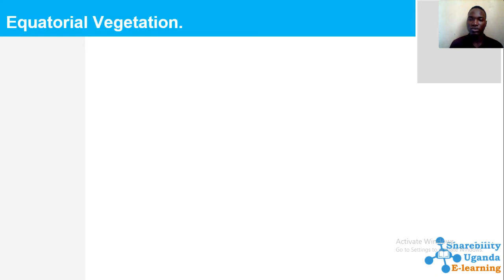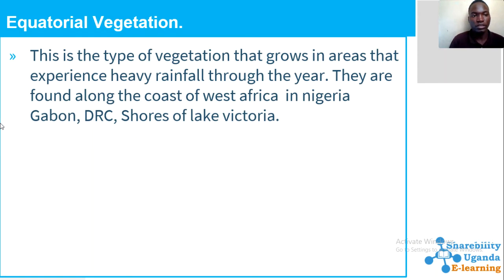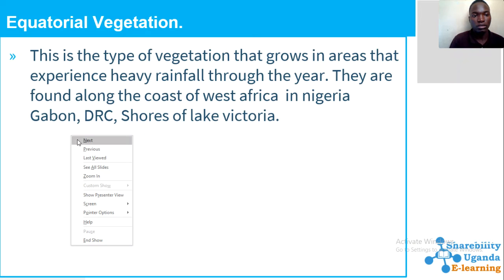First we're going to look at equatorial vegetation. This is the type of vegetation that grows in an area that experiences heavy rainfall throughout the year. We shall have a look at the equatorial vegetation that is found in Africa.